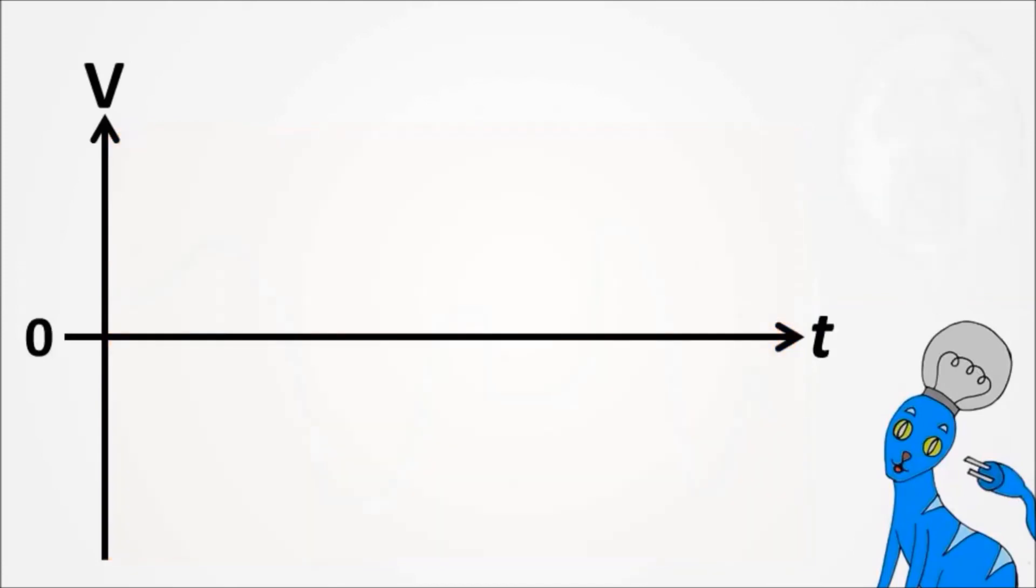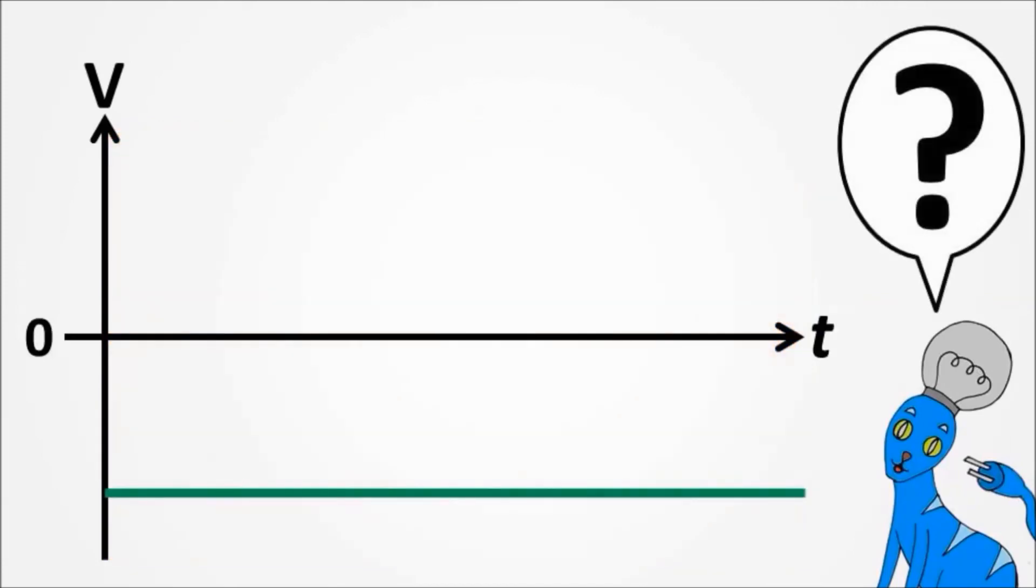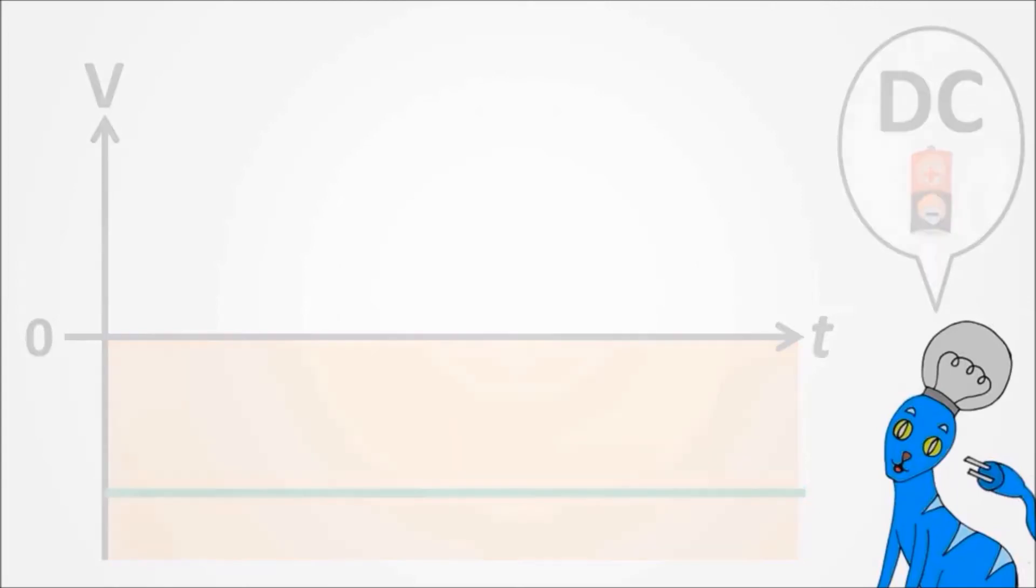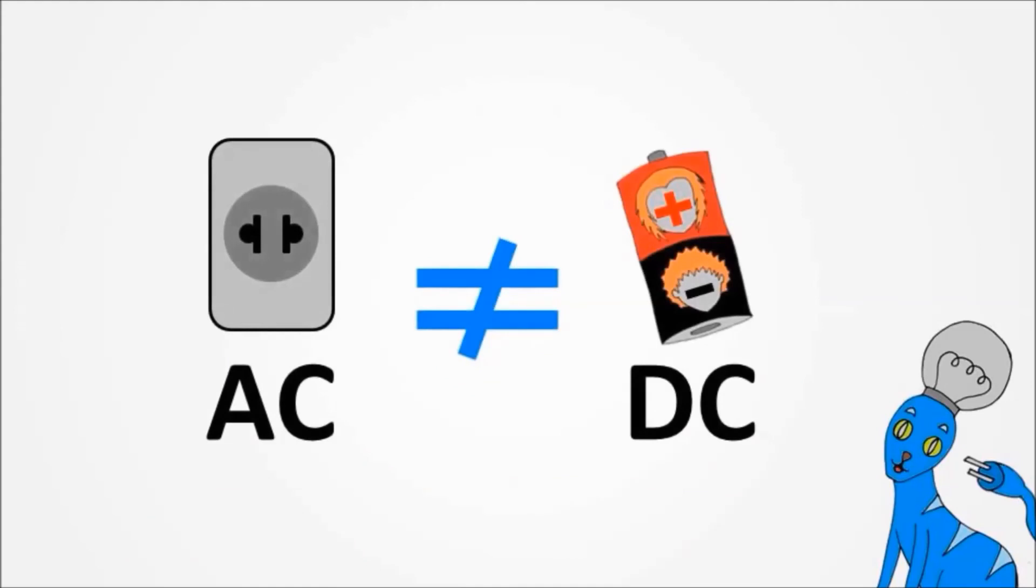And what about that one? It is DC. It doesn't cross the zero line, and it is also a straight line. It's only upside down. I hope now you can see a clear difference between AC and DC, and let's go back to our story now.